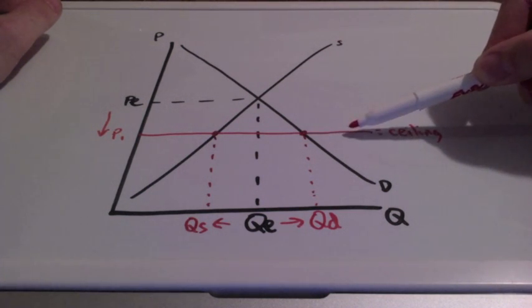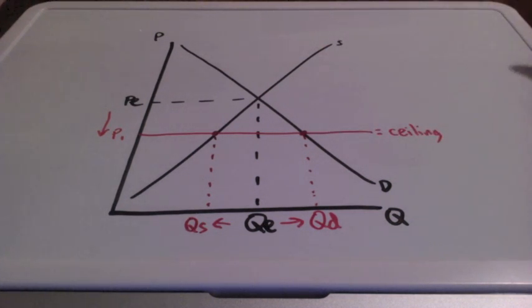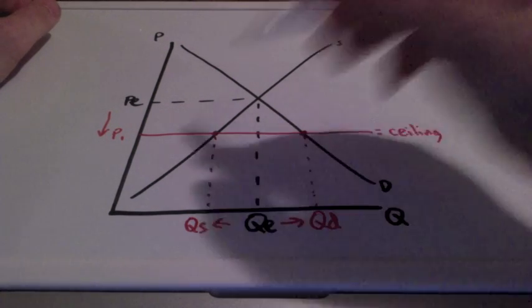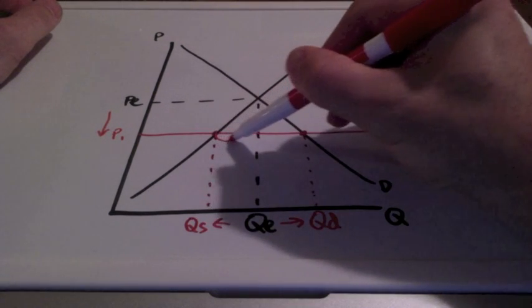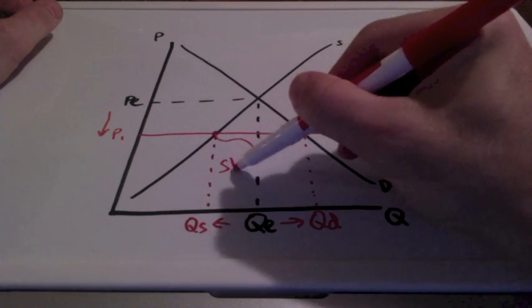Key word, once again, cannot go above the ceiling. This is good for consumers, but not good for producers because this will result in a shortage.